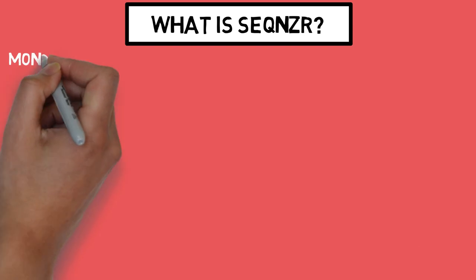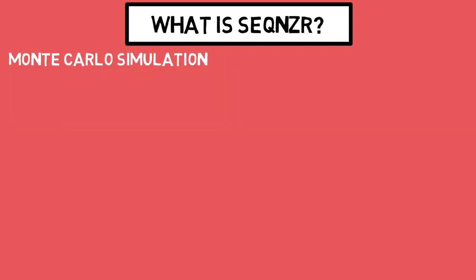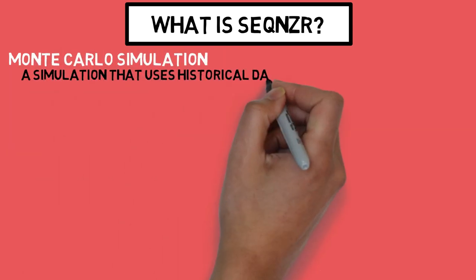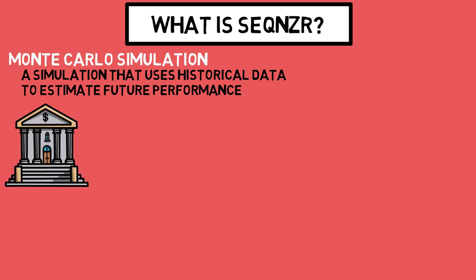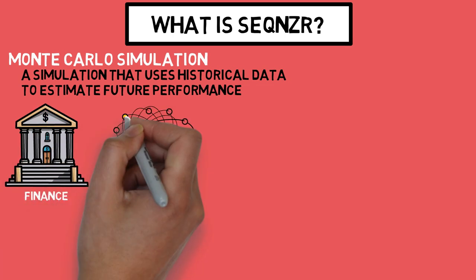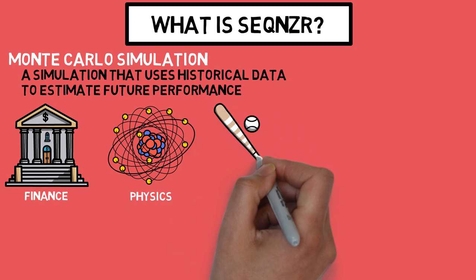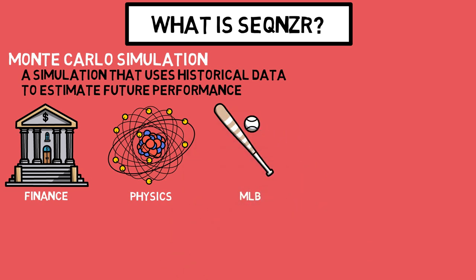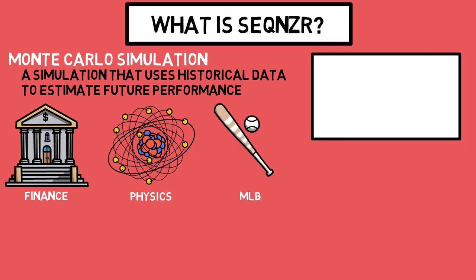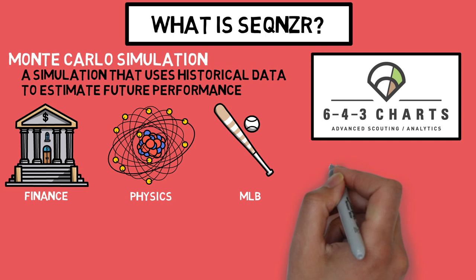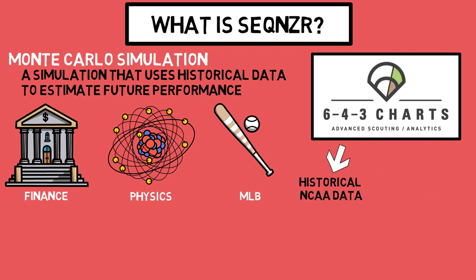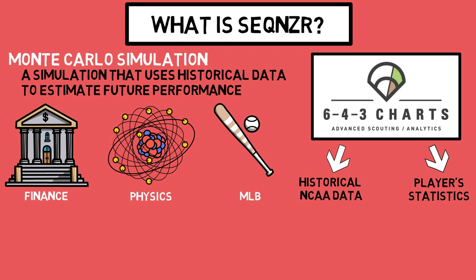Sequencer is a Monte Carlo simulation that uses historical data to estimate future performance. This same type of simulation is used in financial institutions, astrophysicists, and even the MLB. And with the help of their partner 643charts, they're able to access tons of historical NCAA data alongside your individual player statistics in order to provide you with a quality system to make data-driven decisions in-game.